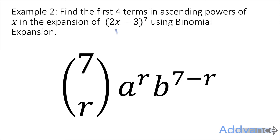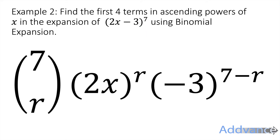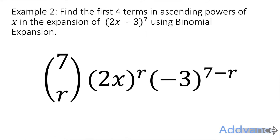Now let's find the first four terms in ascending powers of x in the expansion of (2x − 3)⁷. We replace a with 2x, b with −3, and n with 7 in our formula. Since it asks for the first four terms, we only need r = 0, 1, 2, and 3 — that's a really common exam question to save time.